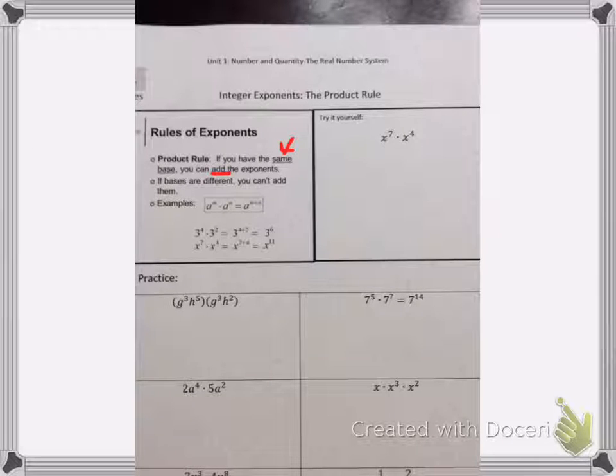So what does it mean to have the same base? Here's your example down here in rule form. It says if you have a to the m times a to the n, the bases would be a, then you can take those exponents up there, the m and the n, and you can add them together to get a to the m plus n.